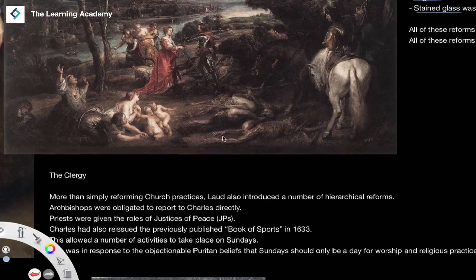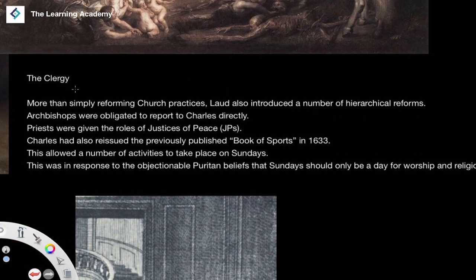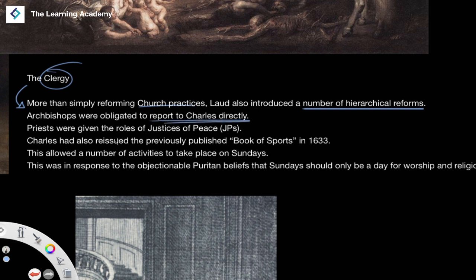On top of reforms to church practices, Laud also introduced a number of hierarchical reforms to the structure of the church. Archbishops were obligated to report to Charles directly, and priests were given the roles of justices of the peace — almost law enforcement roles within the countryside and different areas of the state. Charles had also reissued the previously published Book of Sports in 1633.